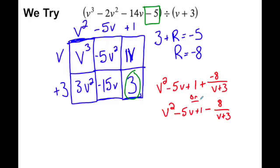We're going to write our answer as v squared minus 5v plus 1. Then for the next part, you have two options: you can write plus negative 8 over v plus 3, or you can move the minus and write minus 8 over v plus 3. Either one is mathematically equivalent, so I would accept either answer. Please make sure you understand what I did here, as we will soon be moving on to the final question for you to do.